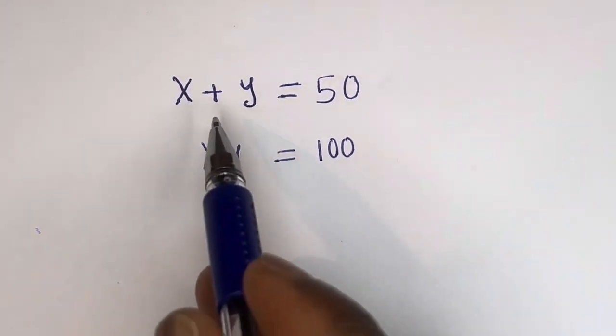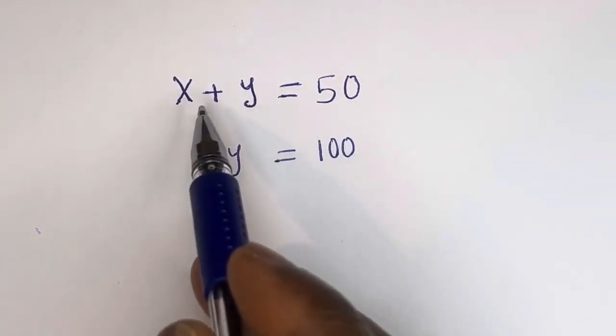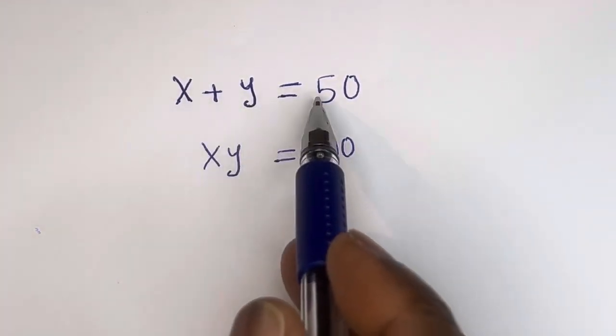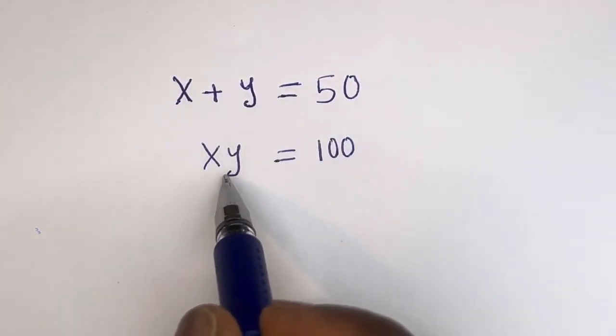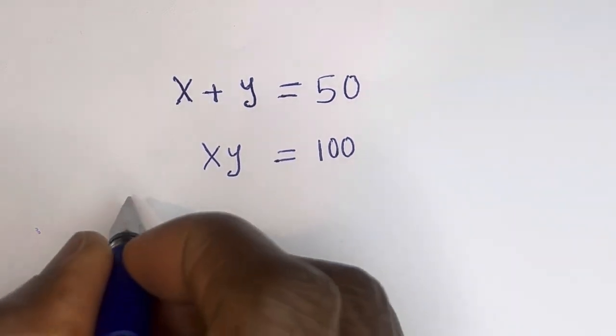Hello, how to solve for x and y in this equation: x plus y is equal to 50, and xy is equal to 100. Solution.